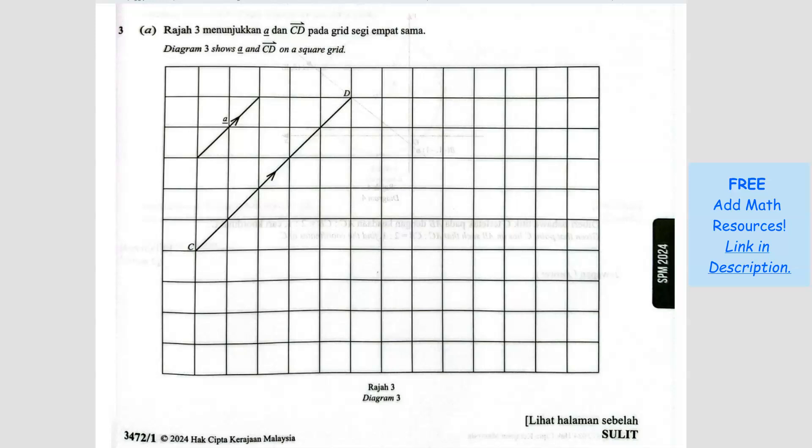Number 3. Diagram 3 shows A. So you've got a vector A and CD. So this is a vector and this is CD.